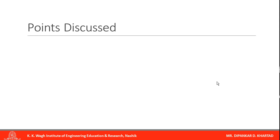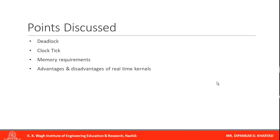Up till now we have discussed various points like the concept of deadlock and how it can be avoided, the concept of clock tick, memory requirements of a real-time operating system and the extra memory required to use the kernel, and various advantages and disadvantages of real-time kernels. Let's move on to the next video.